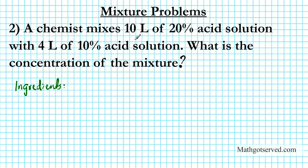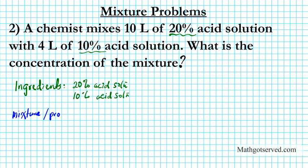What are our ingredients? We're mixing a 20% acid solution and a 10% acid solution. These are the two things we're mixing, and our mixture or product is basically a solution with a certain concentration. But it says 'what is the concentration?' — so I don't know what it is, so we're going to call it an x% acid solution. We don't know what the concentration is. I like to name my mixture and ingredients with the concentration. So we're mixing 20% acid and 10% acid to generate a product with x% acid, because x is what we're looking for.